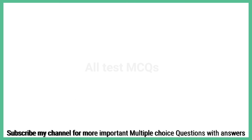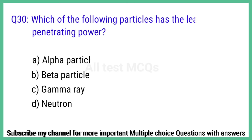Question number 30. Which of the following particles has the least penetrating power? The right answer is option A: Alpha particle.